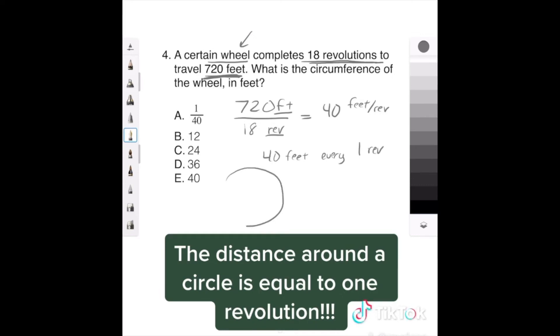If you think about a wheel going around one time, is a revolution, which is also known as the circumference, which is what it's asking for. And it says that one revolution is 40 feet, which is a circumference.